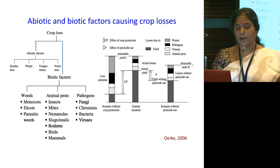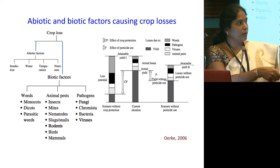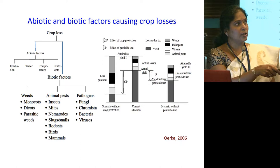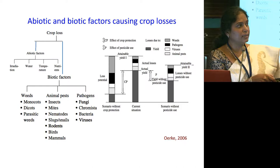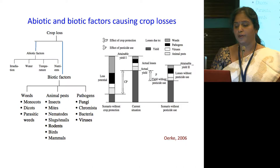This slide gives an overview of how crop losses are happening abiotically as well as biotically. The biotic factors mainly include weeds, animal pests including insects, mites, nematodes, etc., and then pathogens. The right-hand side indicates the scenario without crop protection. There is the actual yield we are getting and the top line is the attainable yield — the loss potential in between is due to weeds, pathogens, viruses and animal pests. Currently, we achieve the actual yield because we take up a lot of crop production activities involving cultural as well as chemical control.